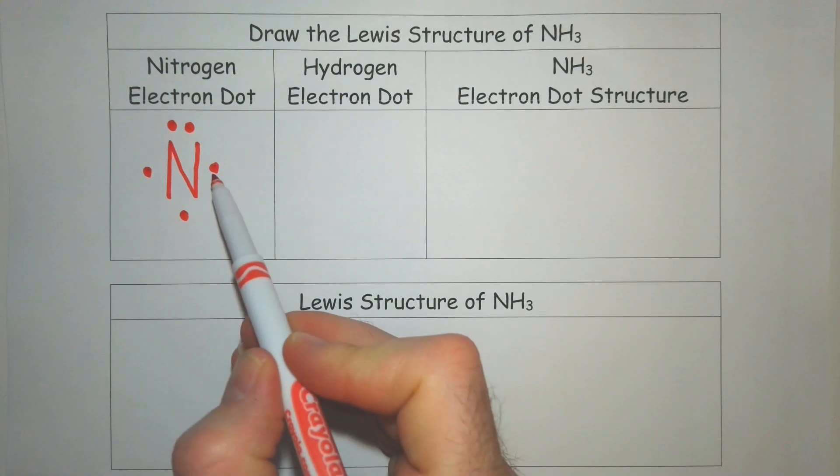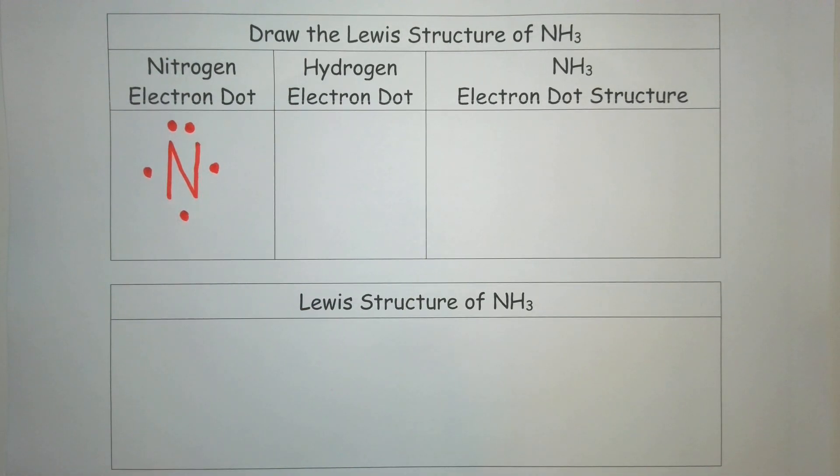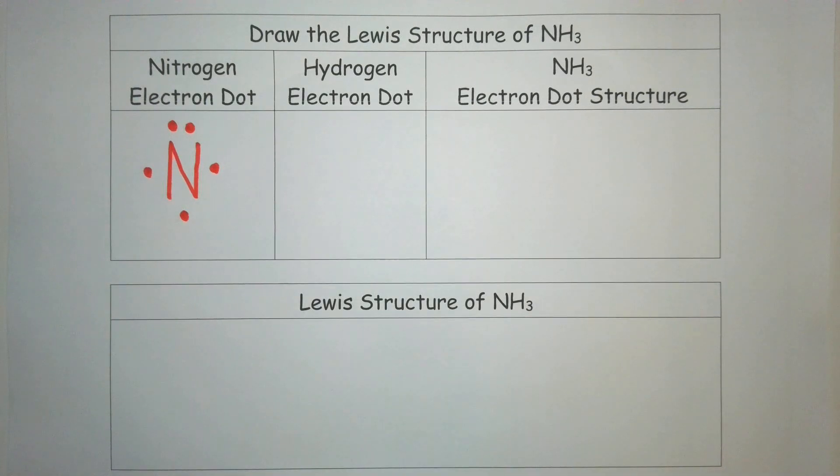As we look at this electron dot notation, we have one, two, three locations where we have unpaired valence electrons. And unpaired valence electrons are going to form a bond. So nitrogen is going to need three bonds.